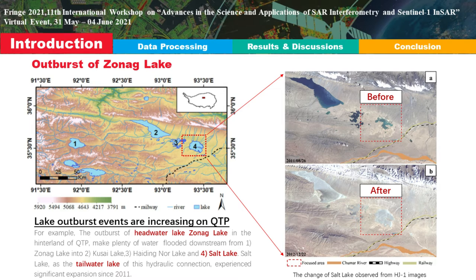For example, the outbursts of Hurleg Lake in the hinterland of the Qinghai-Tibet Plateau caused large amounts of water to flood downstream from Hurleg Lake into Kusai Lake, Haidaer Lake, and Salt Lake. As the tail-water lake of this hydrological chain, Salt Lake experienced significant expansion since 2011.